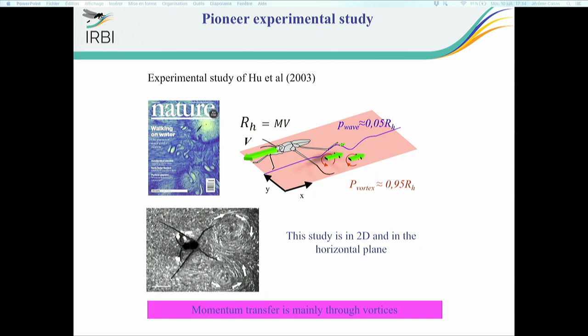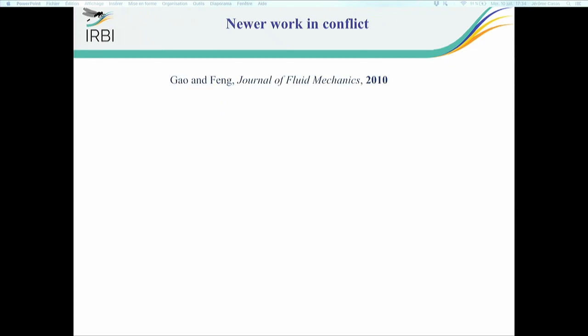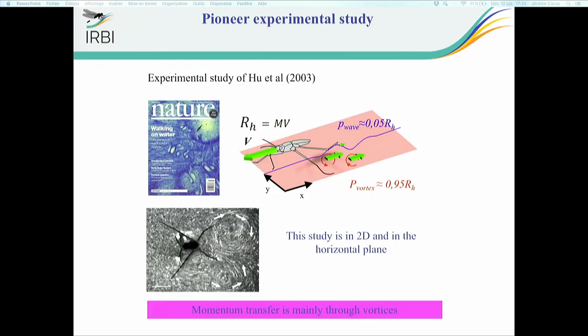So it's actually momentum transfer which was mainly through vortices. I will use for the talk, in our paper we made it very clear, momentum transfer and energy. I use it as a synonym for a reason I will explain at the very end. This study was more or less confirmed by a person whose name is Buehler at NYU. He is basically an applied mathematician looking at vortices. He made a very deep study from an analytical point of view and came to a conclusion which is not far from this.